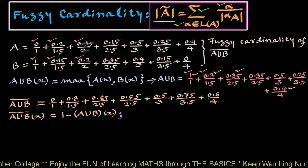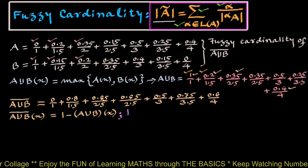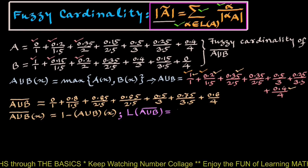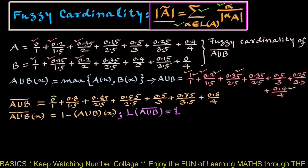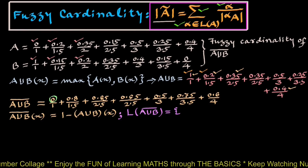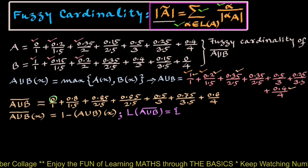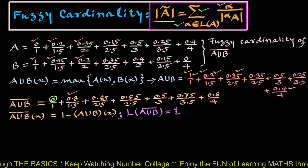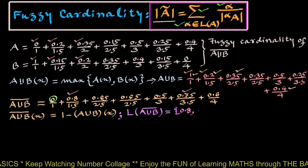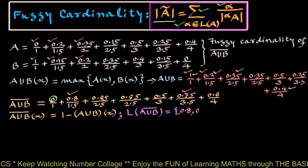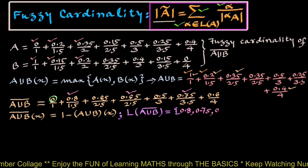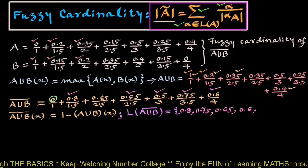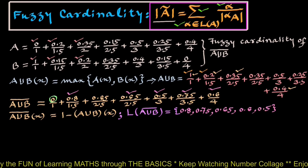Next, we need the complement of A union B. Recalling that complement of (A union B)(x) = 1 minus (A union B)(x), so complement of A union B equals: 1-1=0 upon 1, 1-0.2=0.8 upon 1.5, 1-0.35=0.65 upon 2.5, and 1-0.4=0.6 upon 4. The level set of complement of (A union B), excluding 0, is: 0.8, 0.75, 0.65, 0.6, and 0.5.